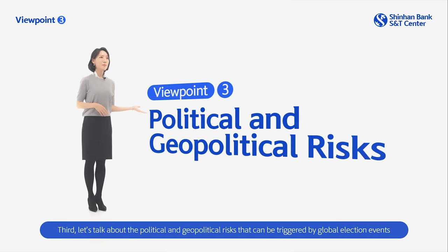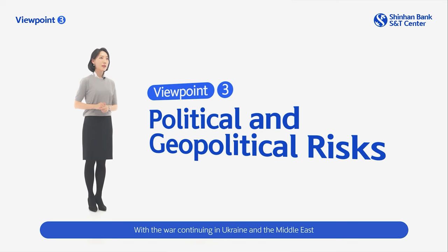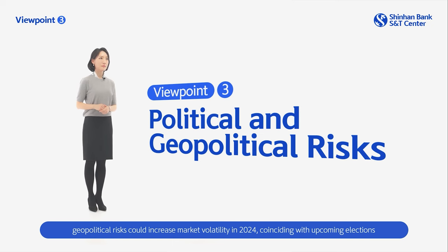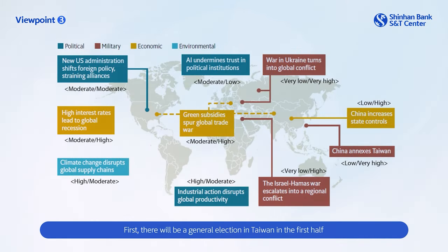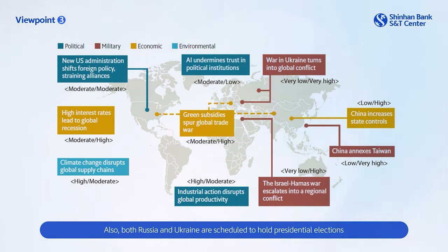Third, let's talk about the political and geopolitical risks that can be triggered by global election events. With the war continuing in Ukraine and the Middle East, geopolitical risks could increase market volatility in 2024, coinciding with upcoming elections. There will be a general election in Taiwan in the first half, causing intense political wrangling between the U.S. and China. Also, both Russia and Ukraine are scheduled to hold presidential elections, so it's difficult to rule out the possibility of rising military conflict.